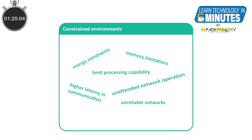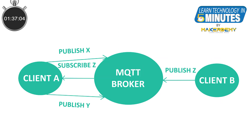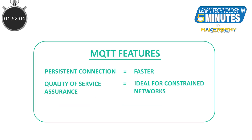In such constrained environments, MQTT is much preferred over HTTP. Unlike the direct client-server interaction of HTTP, MQTT operates under a publish-subscribe paradigm with an MQTT broker in between. MQTT also allows a persistent connection between the client and the broker and different quality of service levels, which makes it more energy efficient and faster than HTTP under such conditions.